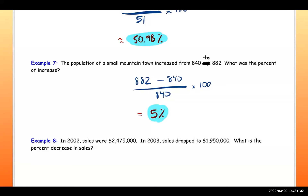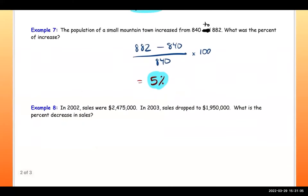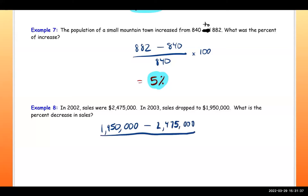The next example: in 2002, sales were $2,475,000; in 2003, sales dropped to $1,950,000. What is the percent decrease? The numbers should be negative because it's a decrease — a smaller number minus a bigger number — divided by the previous amount of $2,475,000, times 100.